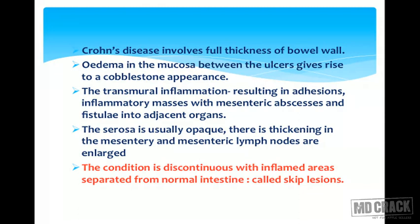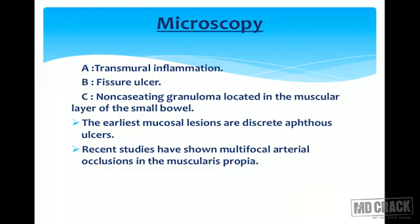The intestine is normal between two lesions, which is known as a skip lesion. Microscopy shows transmural inflammation, fissure ulcers, or non-caseating granulomas located in the muscular layer of the small bowel. The earliest mucosal lesions are discrete aphthoid ulcers. Recent studies have shown multifocal arterial occlusion in the muscularis propria.